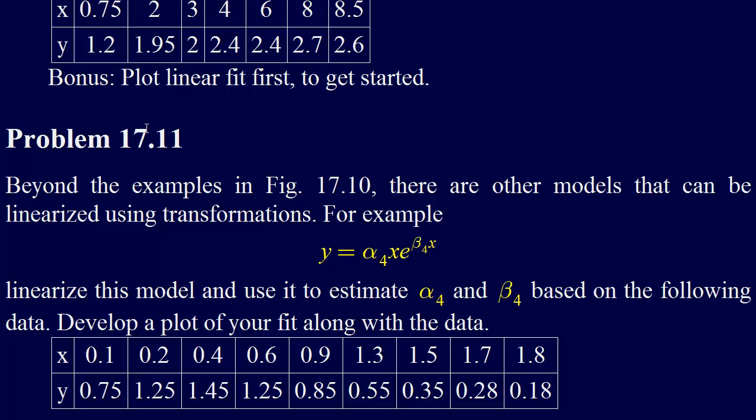All right, next we can do this. The next problem we're going to do is problem 17.11. It says beyond the examples and figures 17.10, there are other models that can be linearized using transformations, for example, alpha 4 x e to the beta 4 x.